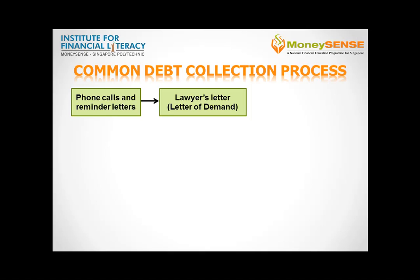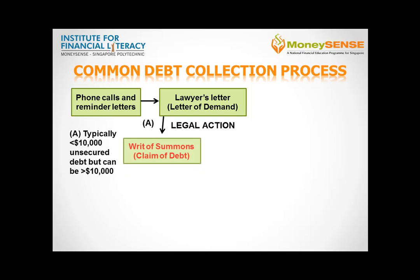If it is still ignored, the creditor can resort to legal proceedings. They may proceed to file a writ of summons in court. A writ of summons is a document informing the debtor that the creditor is making a complaint against them. The writ of summons will then be served to the debtor by court, requiring the debtor to attend court on a certain date to answer the lender's claim for payment.